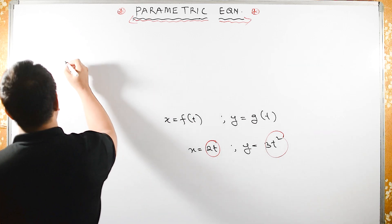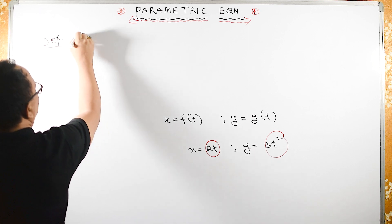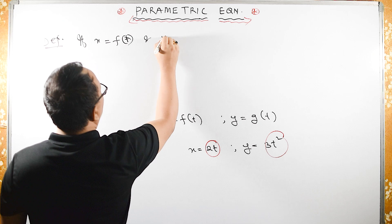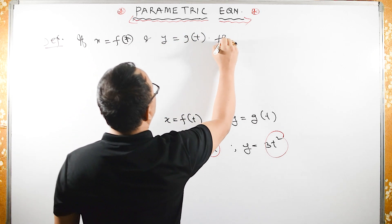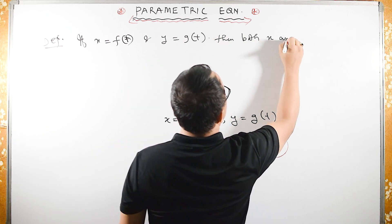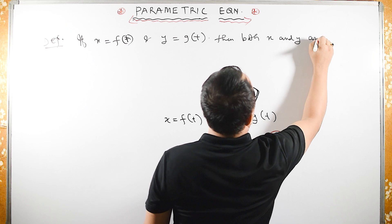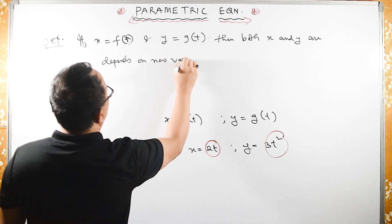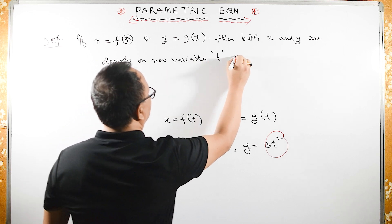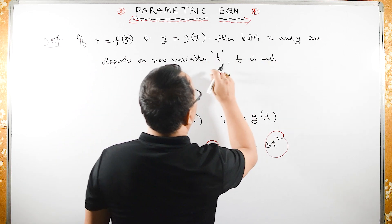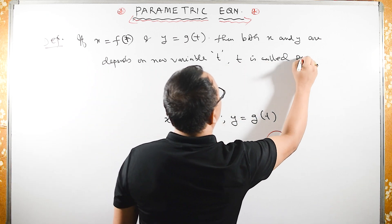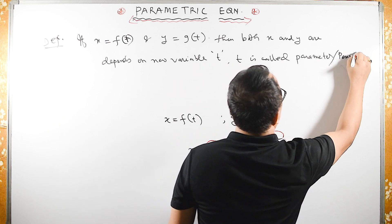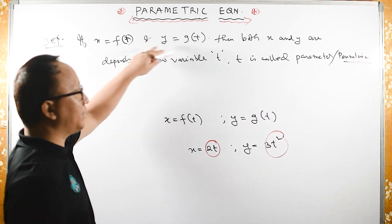The parametric equation definition is: if x is a function of t and y is also a function of t, then both x and y depend on the new variable t. This t is called the third variable, also called the parameter, and the equation is called a parametric equation.